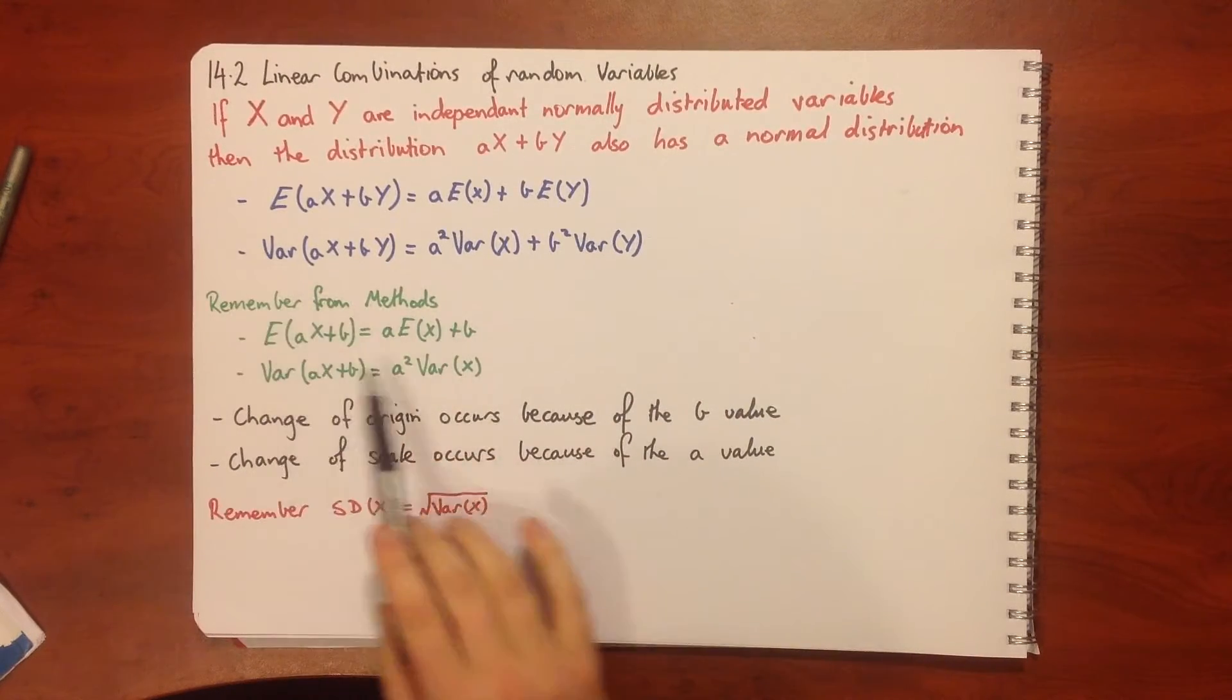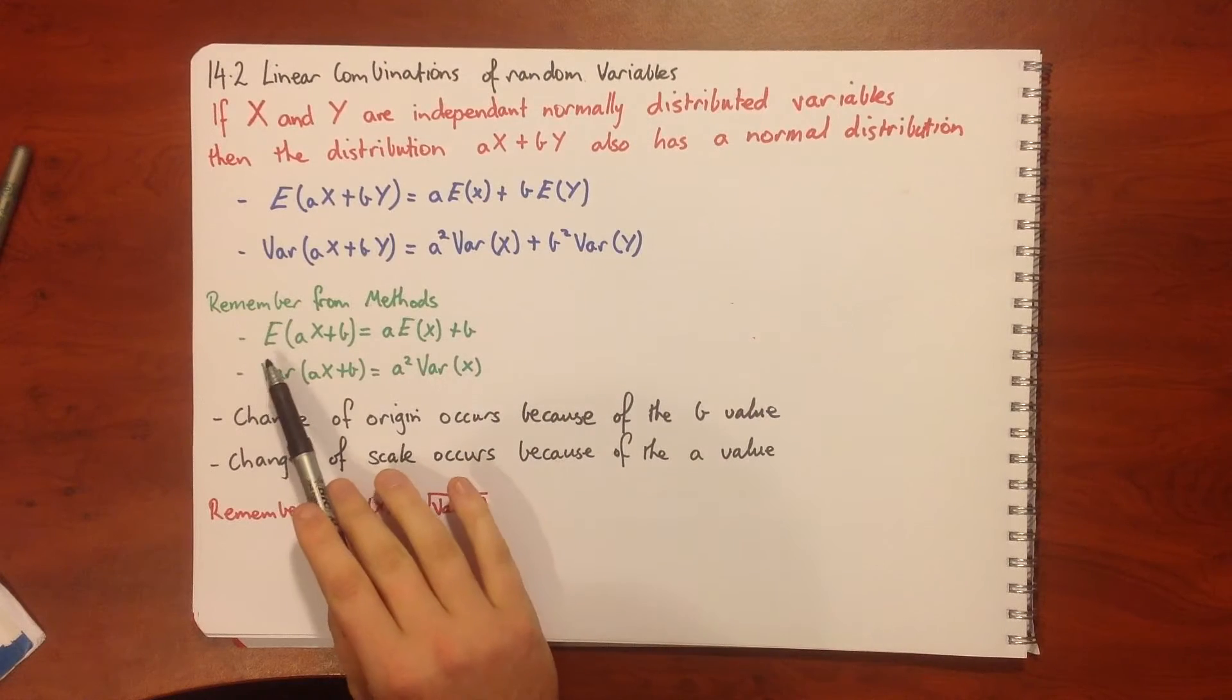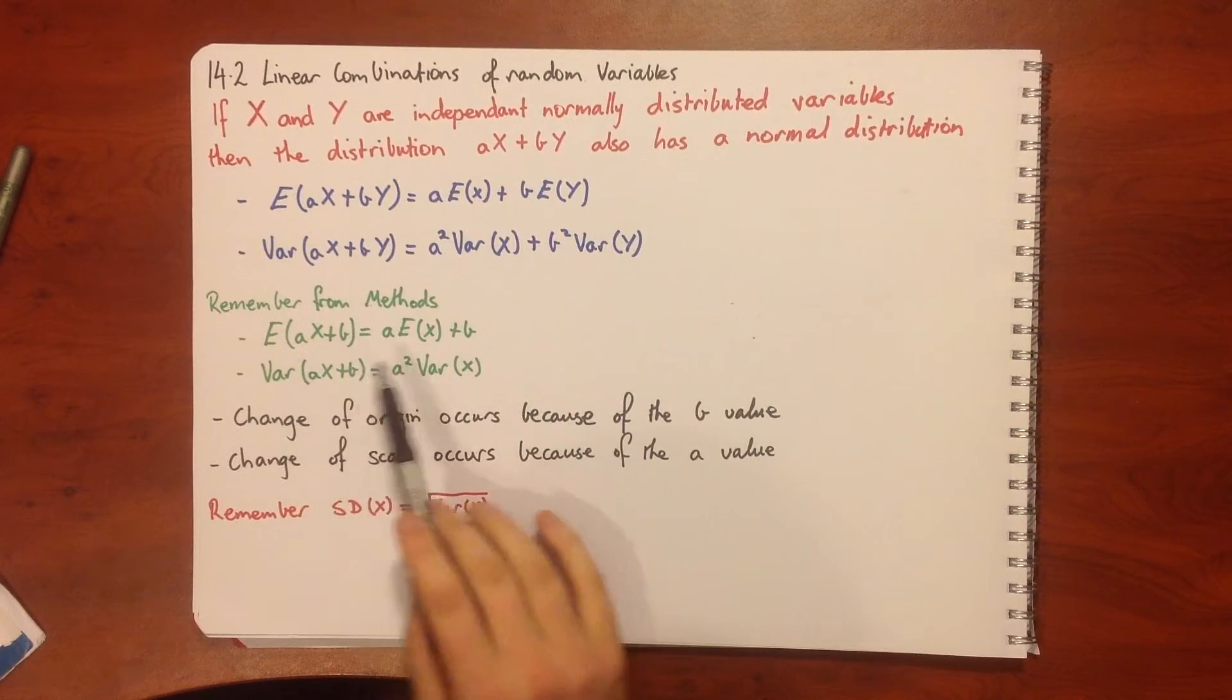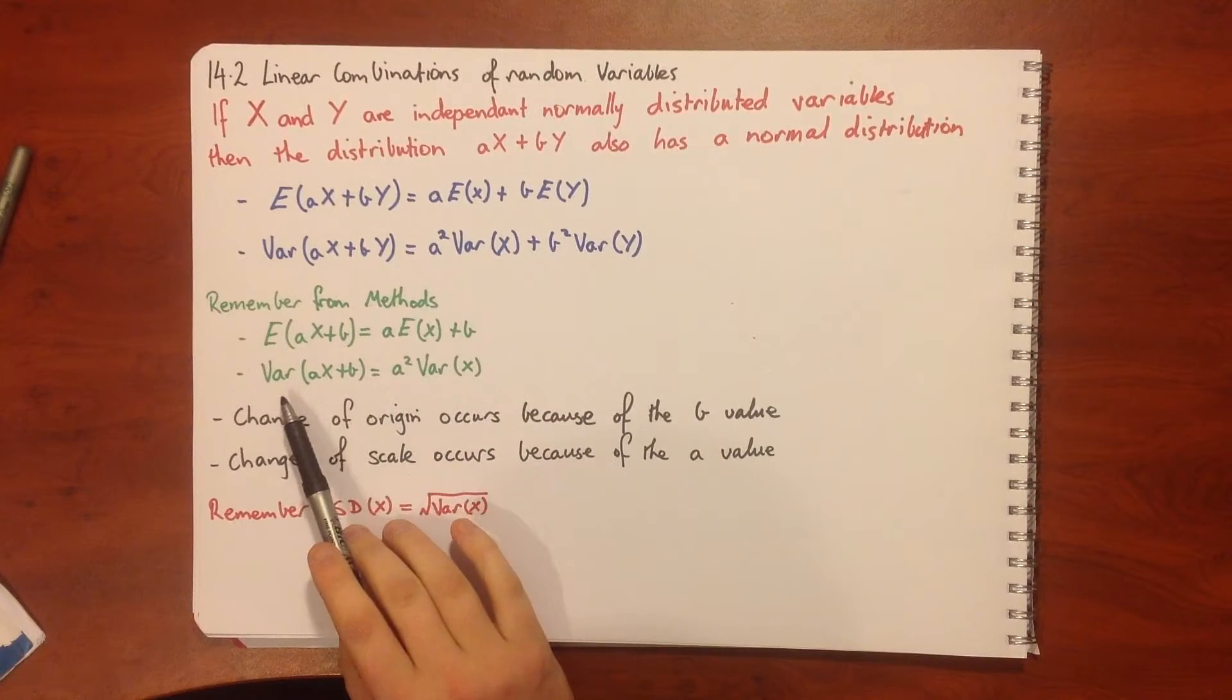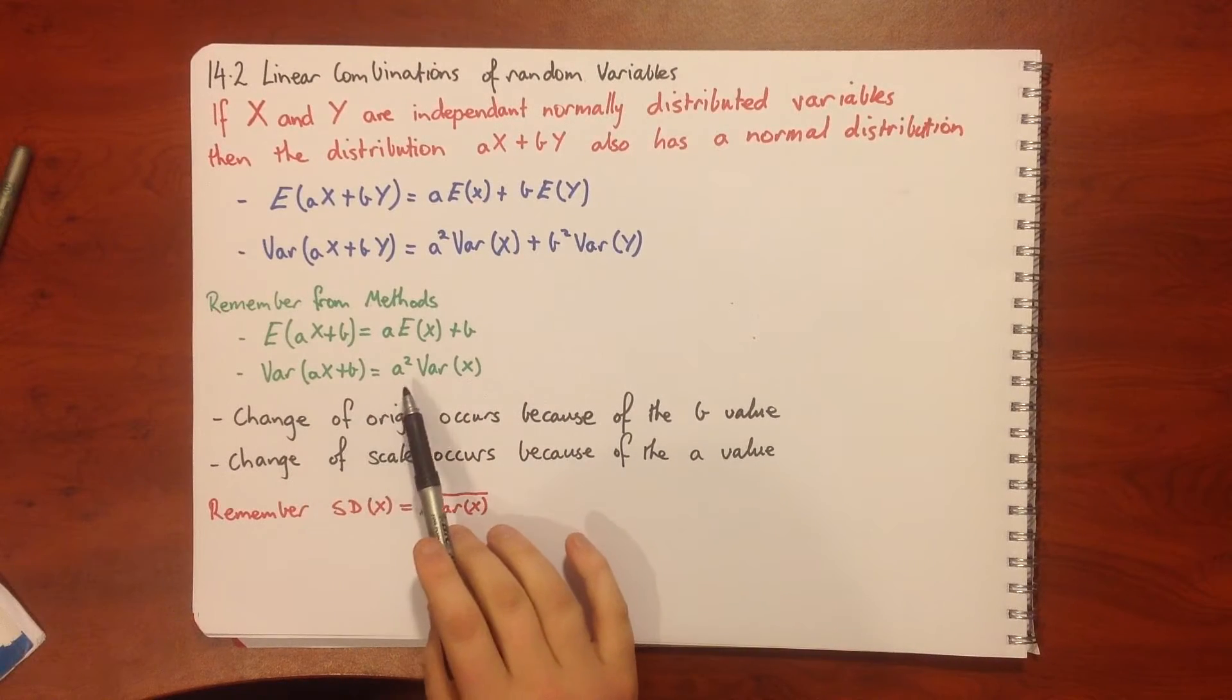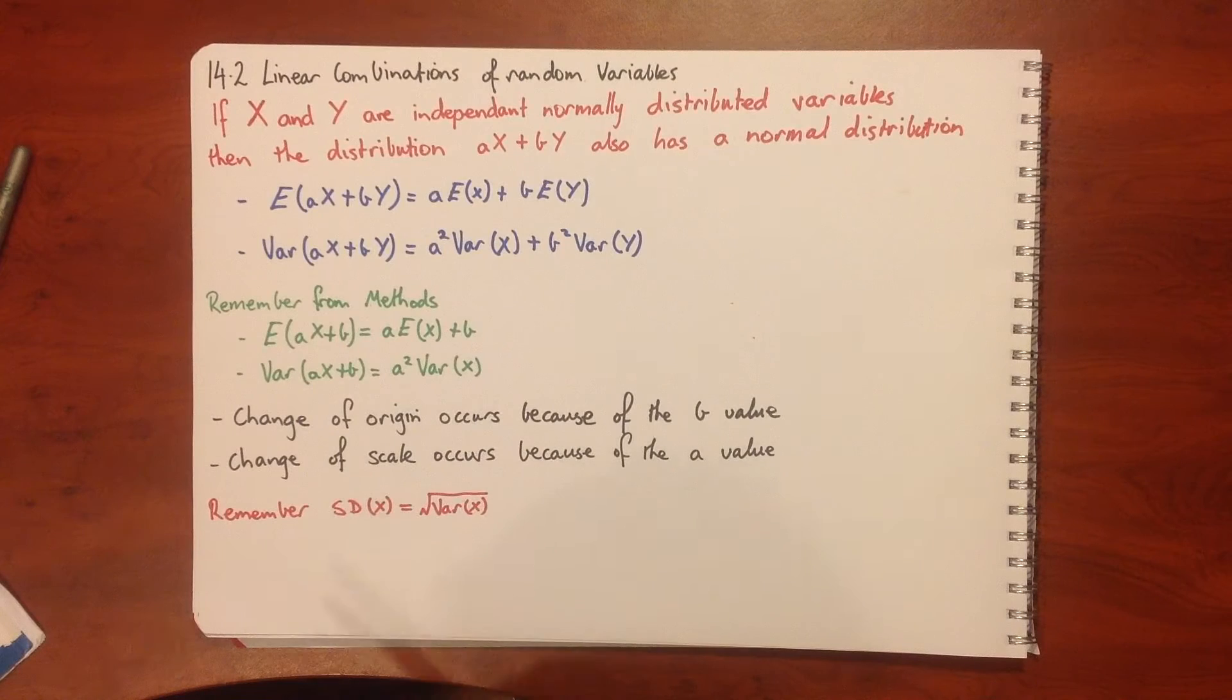Remember from our working methods that's very similar to what we've already seen. The expected value of ax plus b is equal to a times Ex plus b, and our variance of ax plus b is equal to a squared times the variance of x.